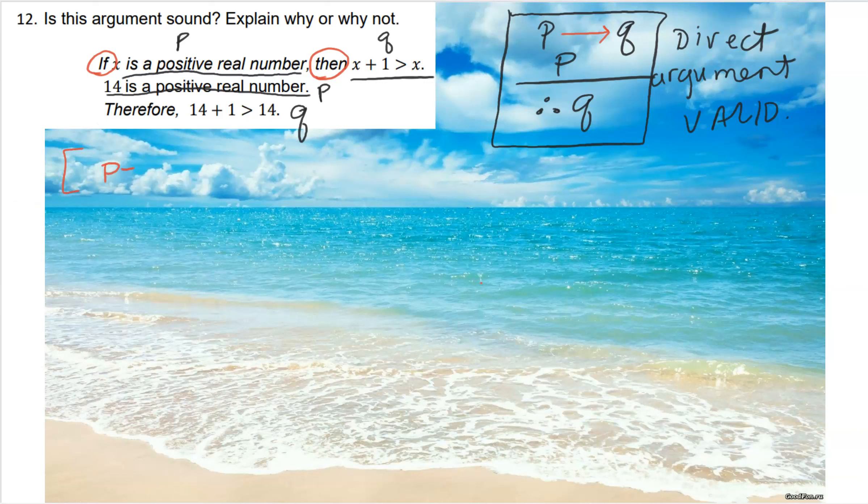To really determine whether this is valid or not, we have to say premise one, which is P implies Q, and P leads to the conclusion Q. When we do a truth table, we would say: is this going to be a tautology? Meaning, are the premises always leading to that conclusion?